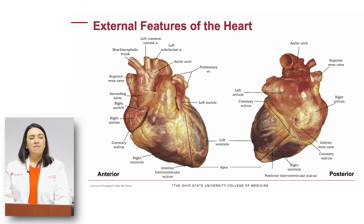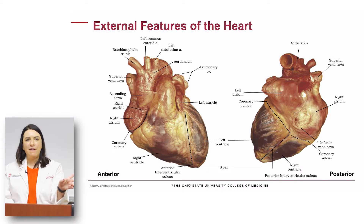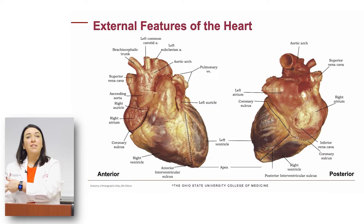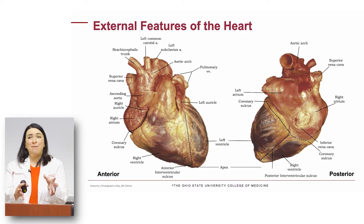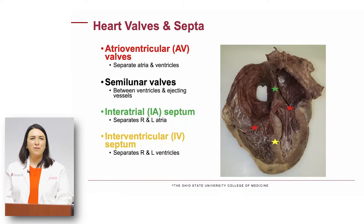Everyone loves to see the aorta. You see it coming out and arching, giving off its three main trunks: the brachiocephalic first, then the left common carotid, and then the left subclavian. You're going to be able to see all these vessels because here at OSU, we'll be working in the lab and taking out hearts so you can see those.